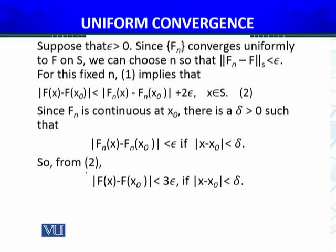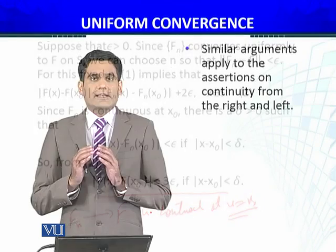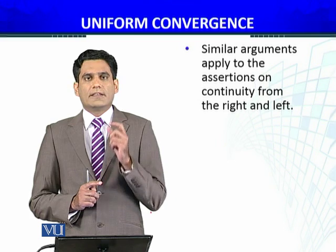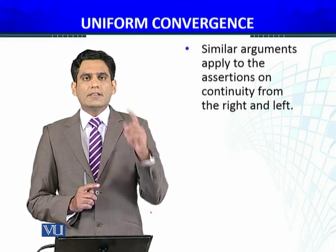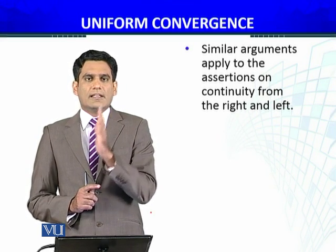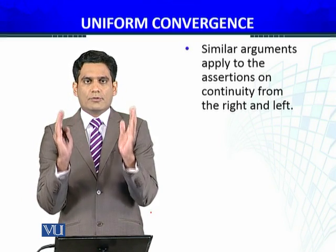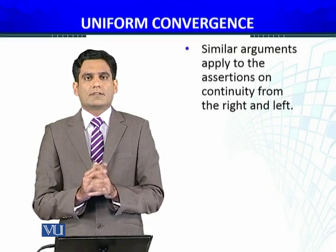This is what we needed to show. From the combined inequalities, we conclude that the function f, which is the limit of the sequence of functions, is continuous at x equals x naught. We have thus proved: if a sequence of functions converges uniformly on S, and at some x naught belonging to S each function in the sequence is continuous, then the limit function f is also continuous at x naught. Similarly, if S is a closed interval [a, b], results for right-sided and left-sided limits at the endpoints can be proved in the same way.